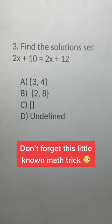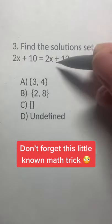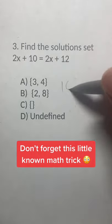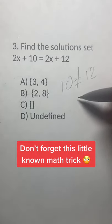Find a solution set of 2x plus 10 equals 2x plus 12. Let's try to solve this — subtract 2x from both sides, and we have 10 equals 12, which simply isn't true.